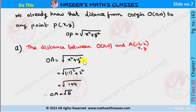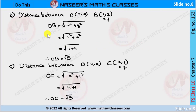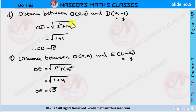To find OA: x = −1, y = 2, so OA = √((−1)² + 2²) = √(1 + 4) = √5. Similarly, OB = √(1² + 2²) = √(1 + 4) = √5. And OC = √(2² + 1²) = √(4 + 1) = √5.